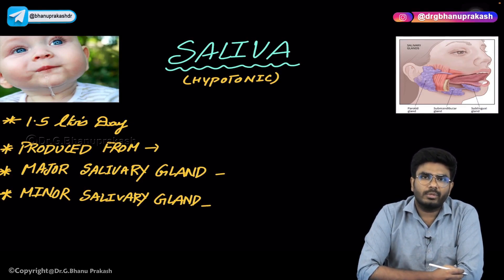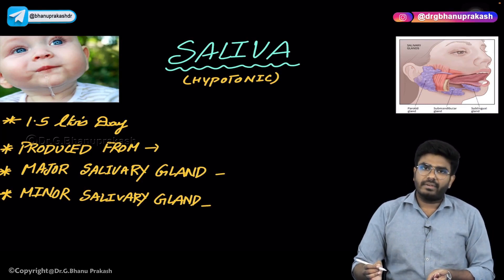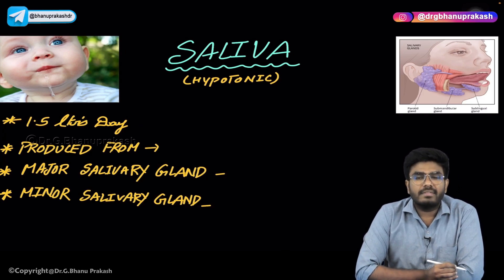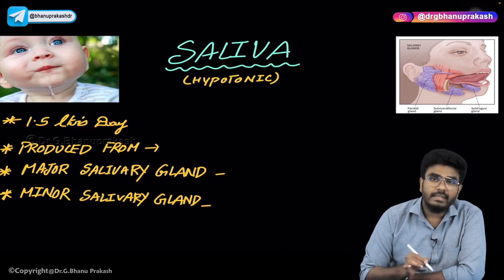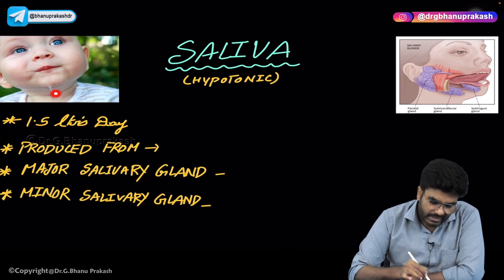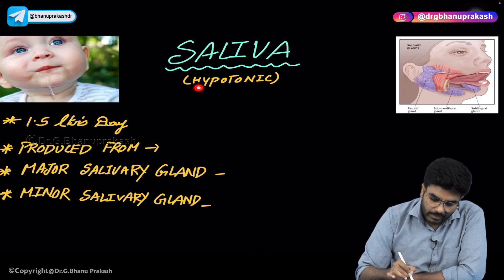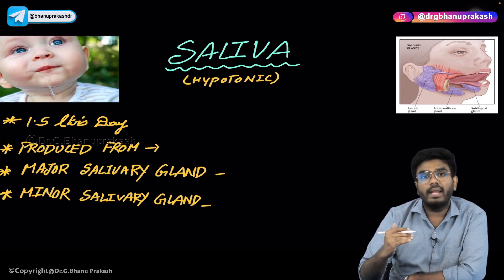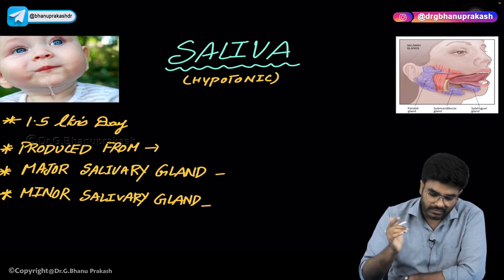Welcome back. In this video, let's discuss about saliva and salivary glands. What is the amount of salivary secretion that happens every day? Usually, 1.5 liters of saliva is produced every day. These salivary secretions are hypotonic in nature — when compared to blood plasma, saliva has a hypotonic nature. The osmolarity of saliva is less than that of blood plasma.